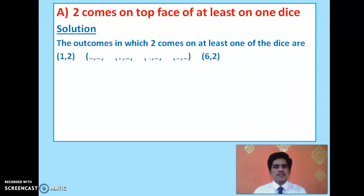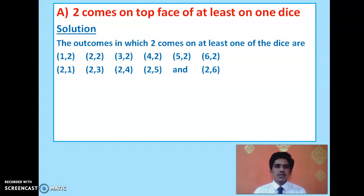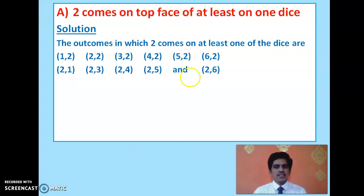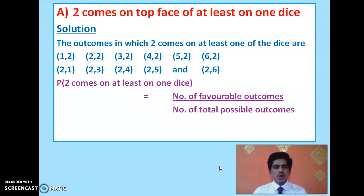The favorable outcomes for getting 2 on at least one die are: 1-2, 2-2, 3-2, 4-2, 5-2, 6-2 (2 on the second die), and 2-1, 2-3, 2-4, 2-5, 2-6 (2 on the first die; 2-2 is already listed). That gives 11 favorable outcomes. Probability = favorable outcomes / total possible outcomes = 11/36.